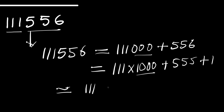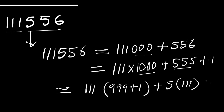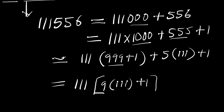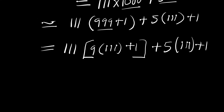So we have 111 times (999 plus 1), plus — factoring out 5 from 555 — we get 5 times 111 plus 1. We can also factor out 9 from 999, giving us 111 times [9 times 111 plus 1] plus 5 times 111 plus 1.